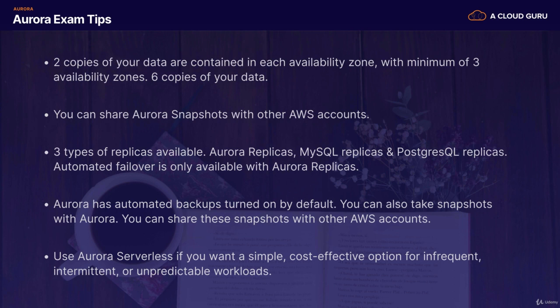Remember that Aurora has automated backups turned on by default. You can also take snapshots with Aurora and share these snapshots with other AWS accounts — taking snapshots is not going to impact your production database. And finally, remember what Aurora Serverless is and the use cases for it: it's a serverless database where you want simple, cost-effective options for infrequent, intermittent, or unpredictable workloads. That is it for this lecture, everyone. If you have any questions, please let me know. If not, feel free to move on to the next lecture.